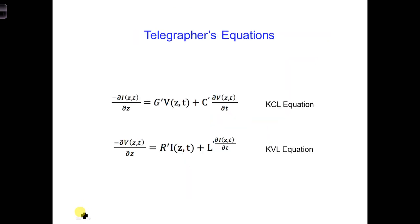In other words, the final form of the KVL and KCL equations are two coupled equations. When the voltage changes in time, that changes the current. And as the current changes in time, that changes the voltage and so forth.